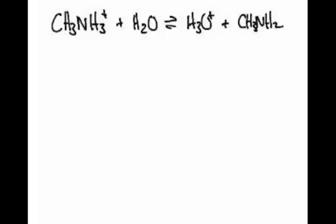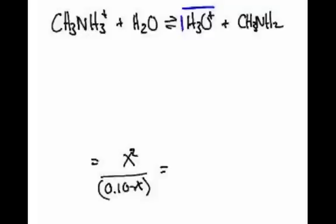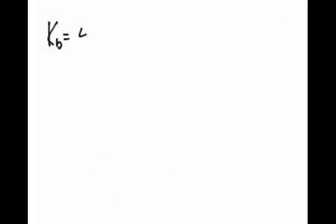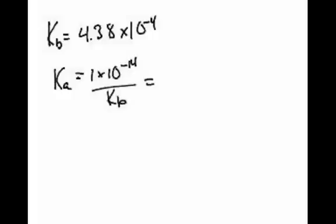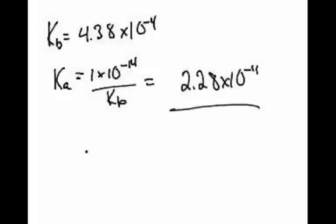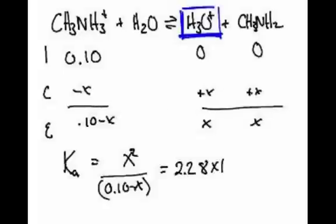Now, this is now an ice table. So, this is 0.100. This would be the minus X thing. 0.10 minus X plus X plus X. Then we'll say that the Ka, because this is an acid. It's because you produce hydronium ions, H3O positive. So, then you're going to say this is equal to X squared over 0.10 minus X. Most likely, in the back of the book, you do not know the Ka value. The Kb is 4.38 times 10 to the minus 4. So, therefore, the Ka is 1 times 10 to the minus 14 over the Kb. And that gives you 2.28 times 10 to the negative 11.